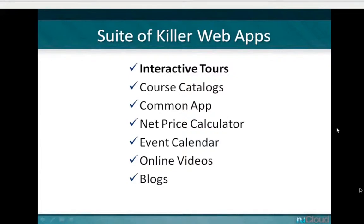Here is a suite of killer web apps that every college website needs: an interactive map, which we just said is single-handedly the most important; course catalogs going digital; the Common App for applications; a net price calculator, now required by law; an event calendar valuable for prospective students, current students, faculty, and staff; and online video and blog for social media content. Interactive maps and interactive tours definitely fit on this list of killer apps.